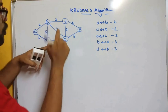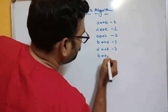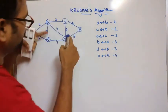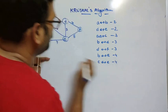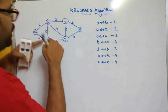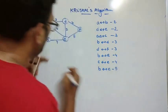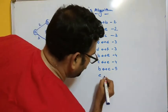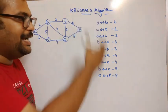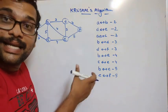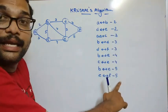Next, edges with cost 4: B to E with cost 4, and C to E with cost 4. Then cost 5: B to C with cost 5, and E to F with cost 5. These are all the edges arranged in ascending order from lower to higher cost.